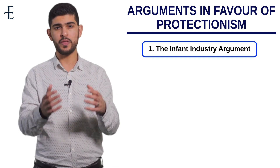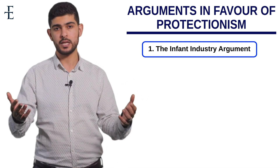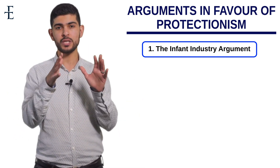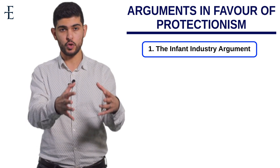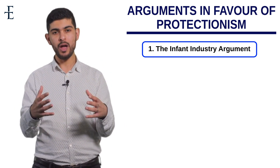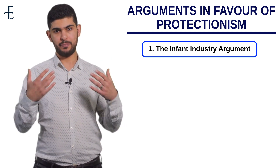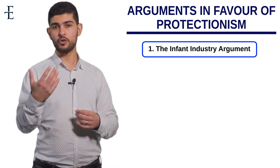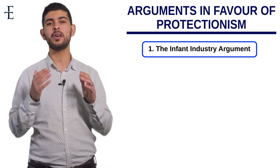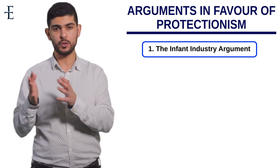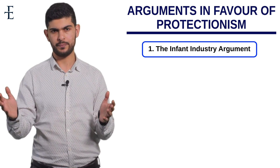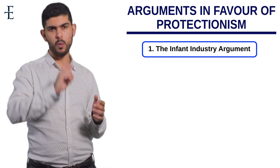Therefore the infant industry argument states that the government should impose protectionist policies in the short run so that domestic firms have the time required to tap into economies of scale, grow organically, and then once they are ready to compete on an international basis, you can remove the barriers to trade.